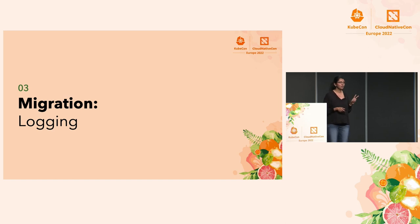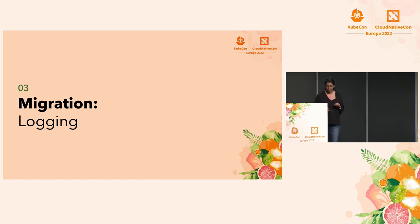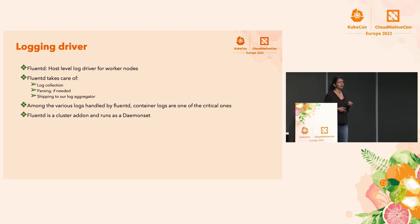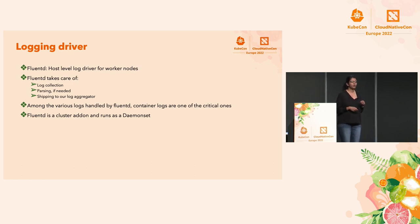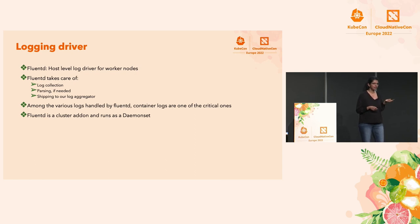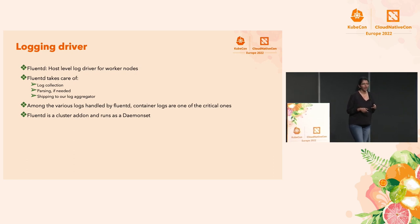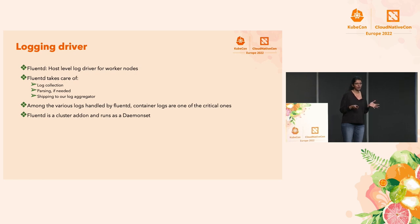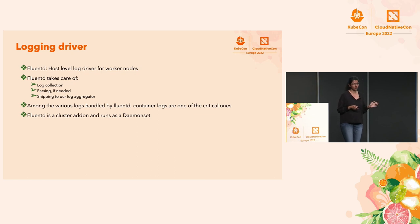We had gotchas, and I'm going to talk about two of them. The first was about the logging pipeline. We use FluentD as our node driver for logging. FluentD is responsible for log collection, log parsing if needed, as well as shipping to our log aggregator, Splunk. FluentD takes care of shipping pretty much all the logs in our nodes, but the critical ones are container logs, and we cannot afford to miss even a small gap. Log loss is a big no-no in our infrastructure.